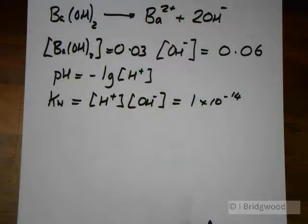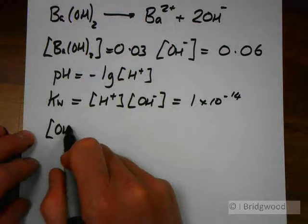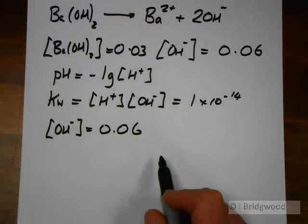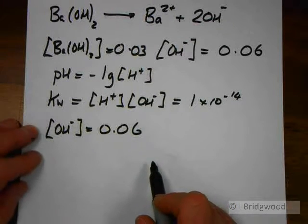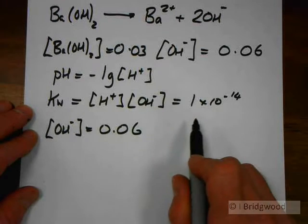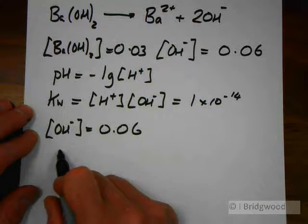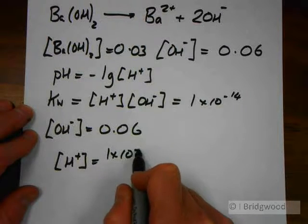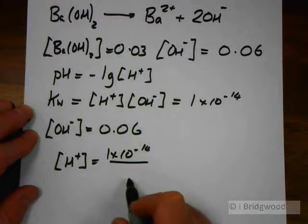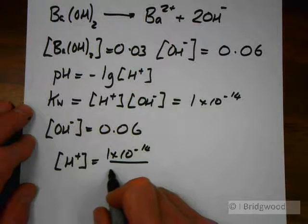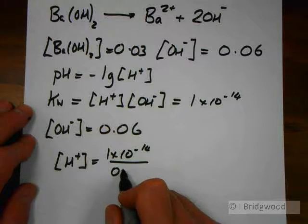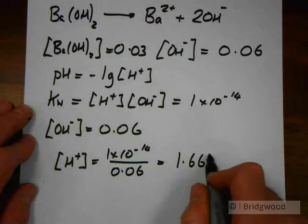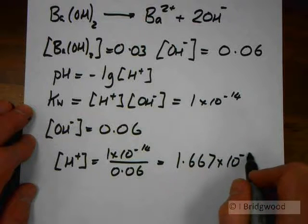So, if we've got concentration of hydroxide ions equals 0.06 moles per cubic decimetre, by rearranging our Kw expression, we can work out that the concentration of hydrogen ions is equal to 1 times 10 to the minus 14 divided by the concentration of hydroxide ions, which is 0.06, giving me a value of 1.667 times 10 to the minus 13.